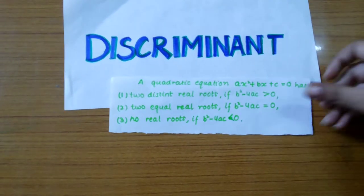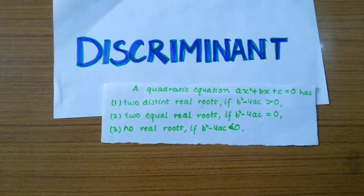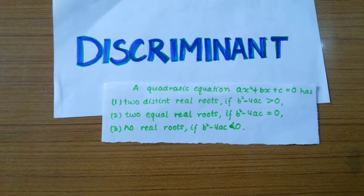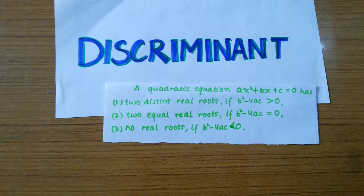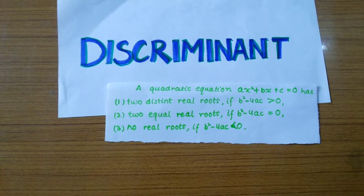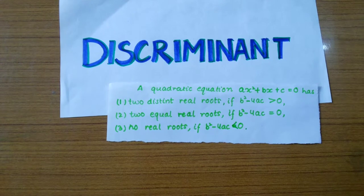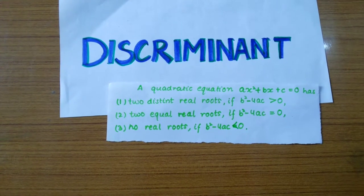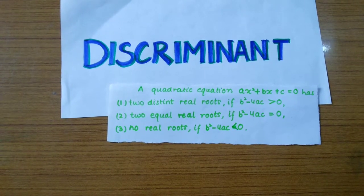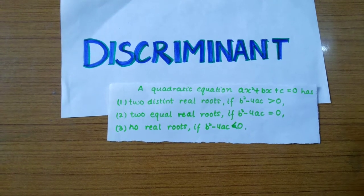A quadratic equation ax squared plus bx plus c equals zero has two distinct real roots if b squared minus 4ac is greater than zero, two equal real roots if b squared minus 4ac is equal to zero, and no real roots if b squared minus 4ac is less than zero.